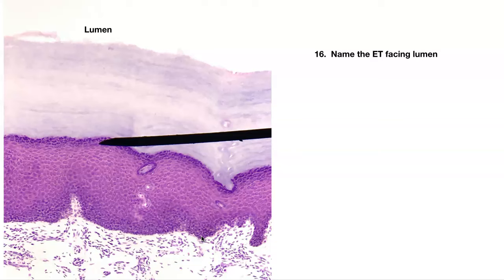Number sixteen — name the epithelial tissue. It's stratified. This is skin — when we get to the integumentary system you'll know this is thick skin. This is stratified squamous keratinized. All this top portion is dead — old cells that filled up with keratin, so now they're dead. Stratified squamous keratinized.